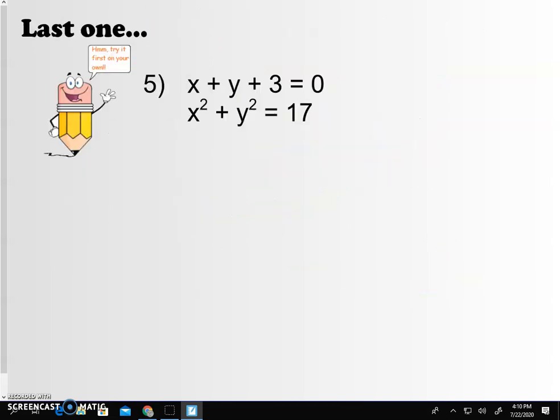Last problem. And then you get to try some on your own. So look at this guy right here. He says, hmm, try it on your own first. So give it a go. Pause the video. Give it a try. Well, I hope you paused it and you tried it. First of all, you know this top one is a line. It's linear. The second one, you have to think all the way back to your geometry days. This is a circle. We have a line and a circle.